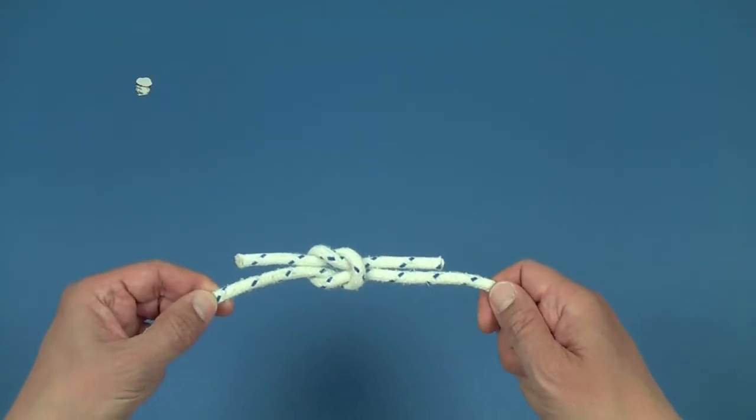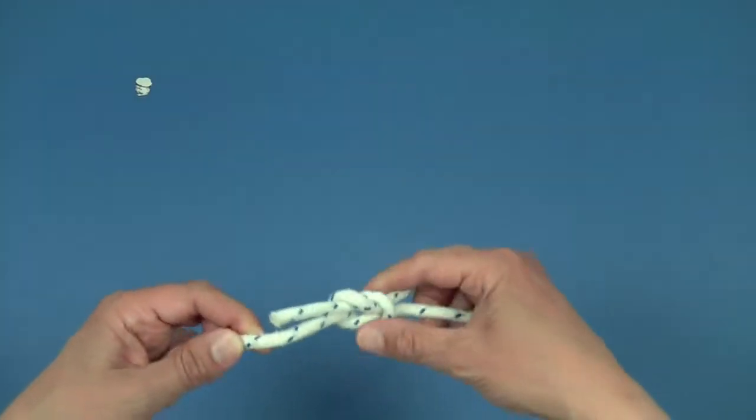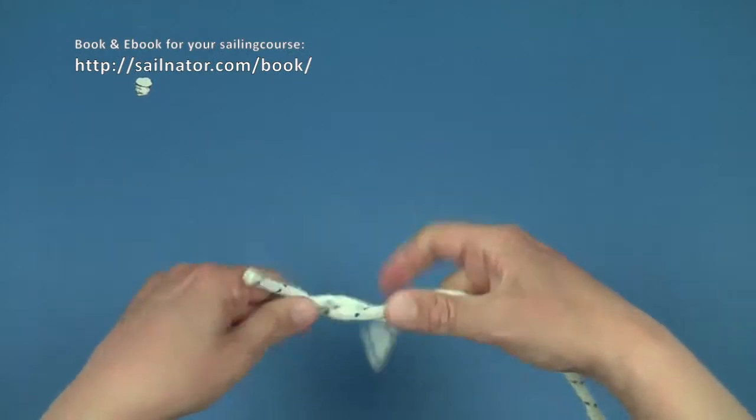In this video I show how to tie the square knot. We can attach two lines of the same strength with it.